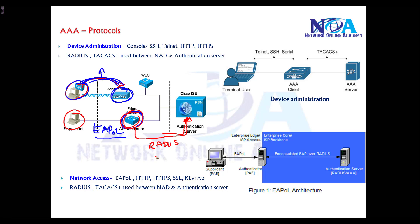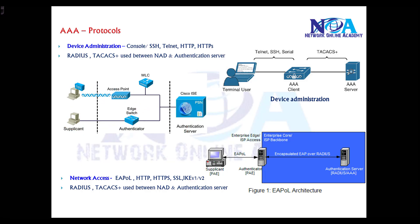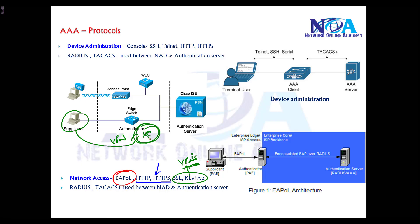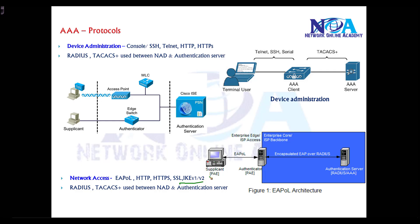The communication between the authenticator and the authentication server is done with RADIUS or TACACS+. RADIUS is widely used for network access, while TACACS+ is commonly used for device administration. For VPN scenarios — remote VPNs or any VPN gateway like a router or ASA — users will typically use SSL or IKE protocols, while within the LAN they use EAP over LAN.